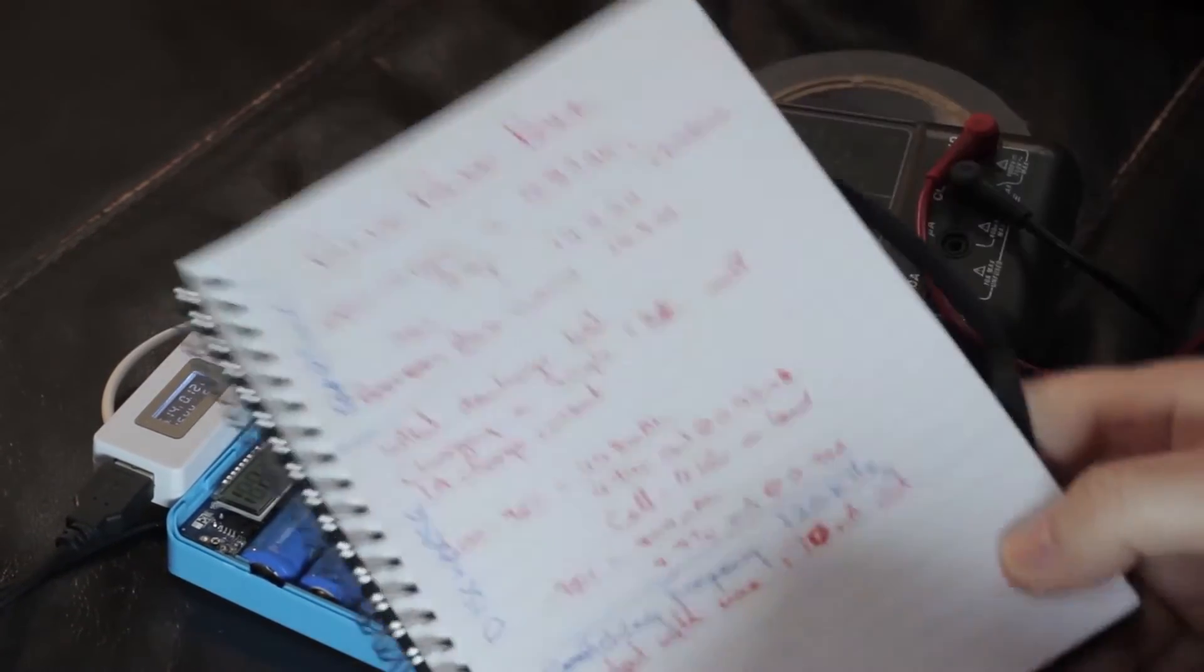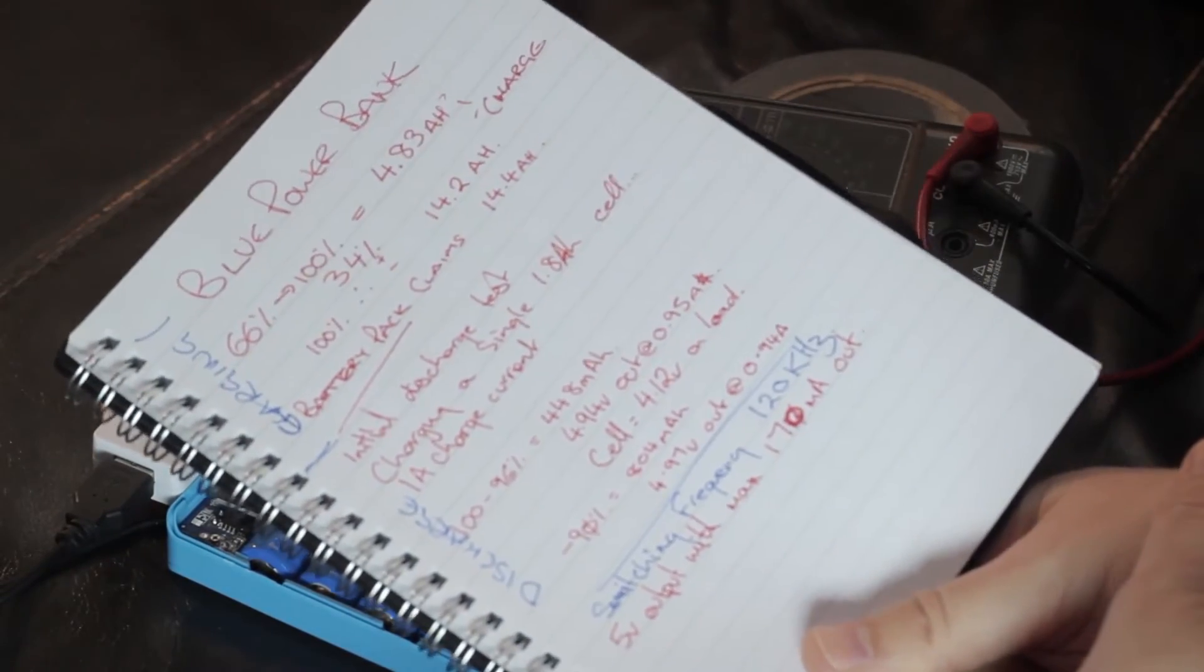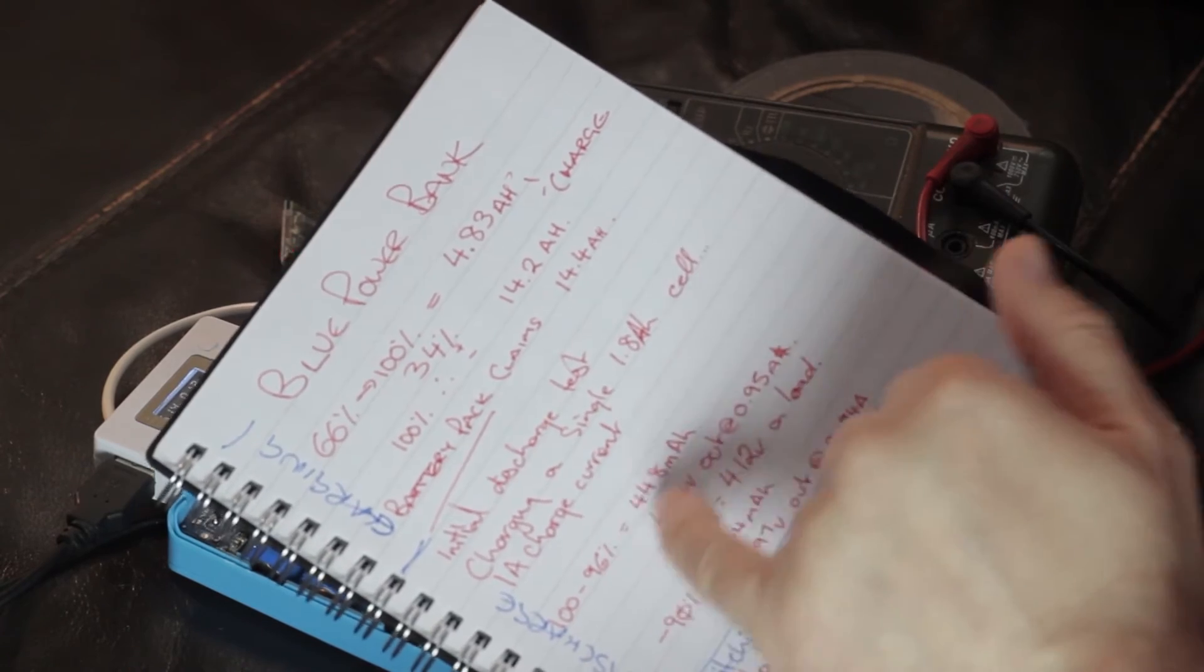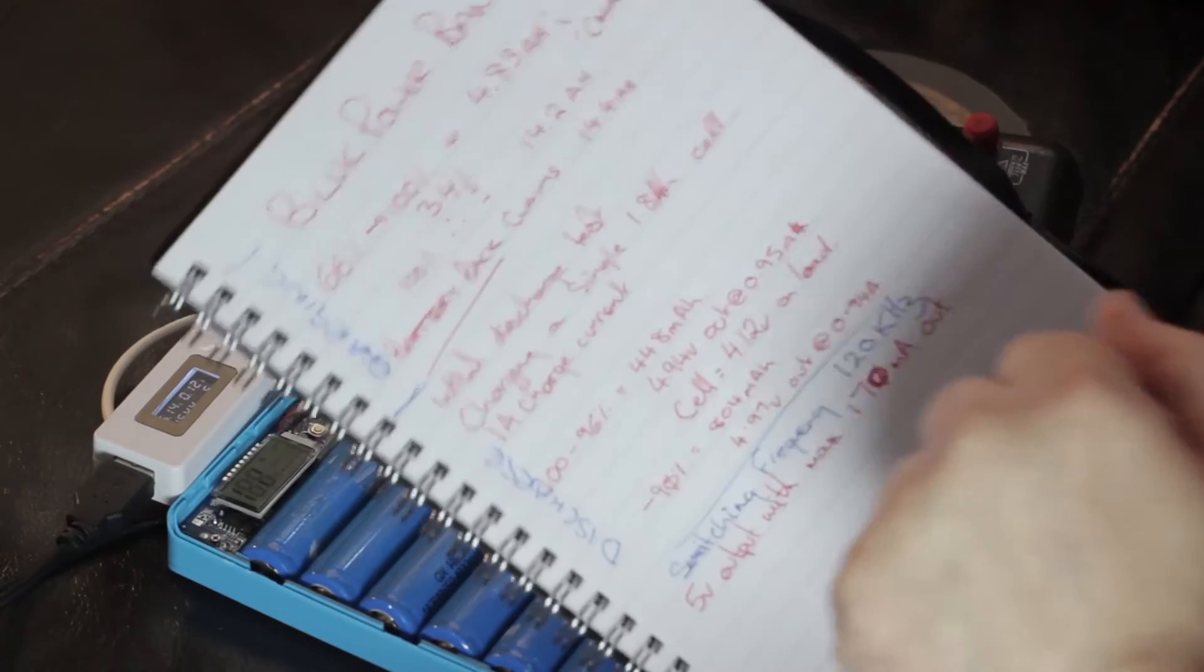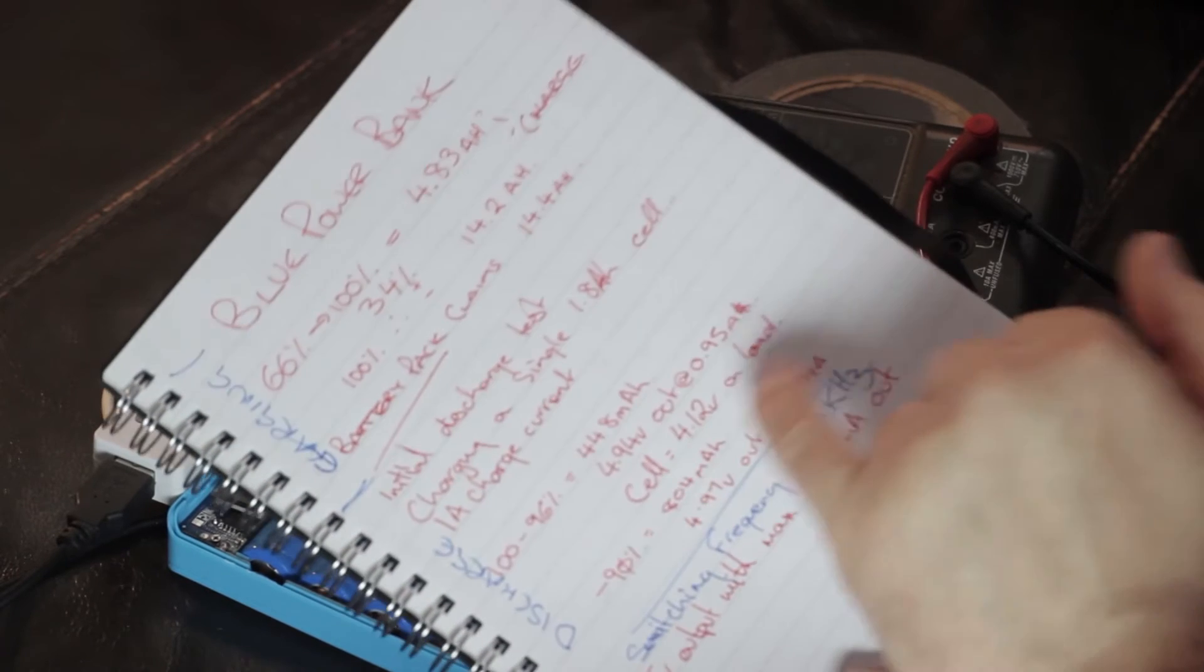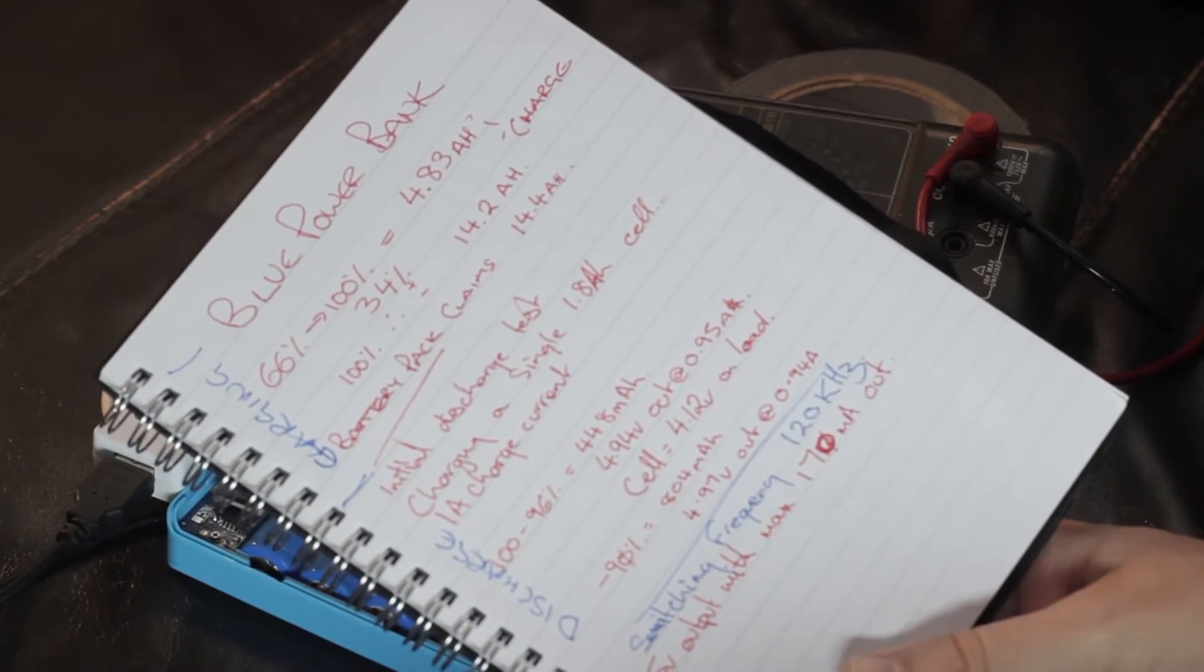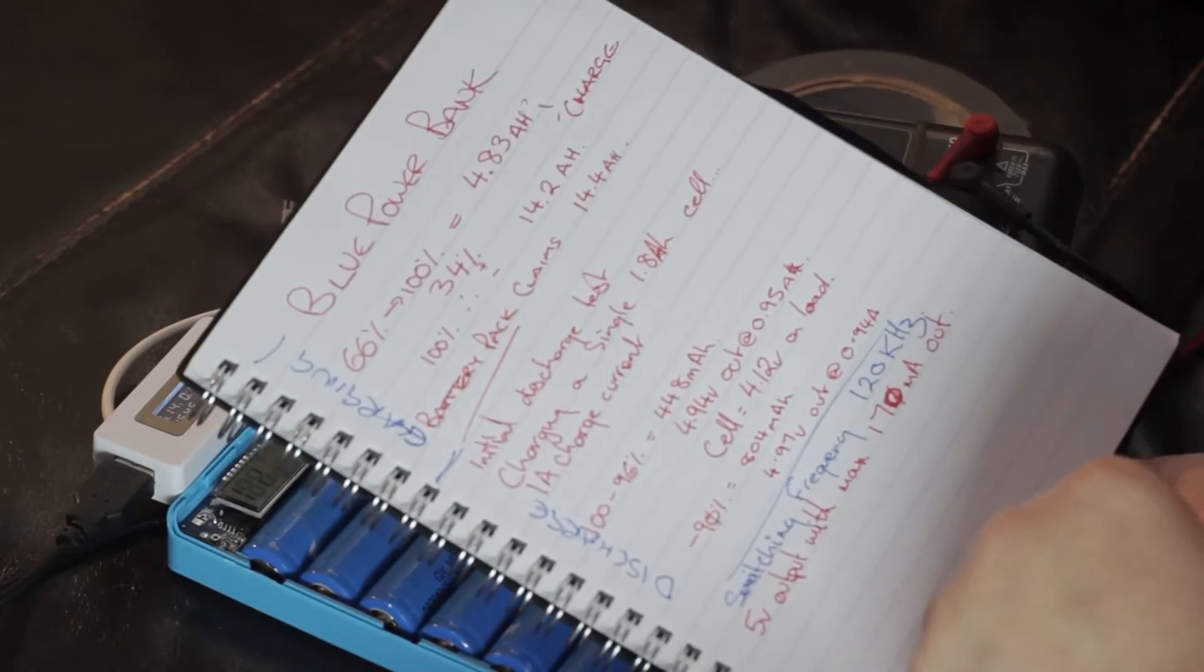So, here's some basic numbers I was throwing out as I was working on this. The initial discharge test is charging a single, slightly lower capacity cell. 100% to 96%, that's on this battery, was 448 milliamp hours. Now, it was drawing 0.95 amps out at that point. And then the output voltage had dropped to 494. The cell voltage here was 4.12 volts on load.